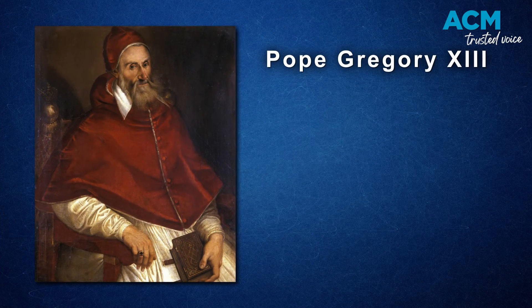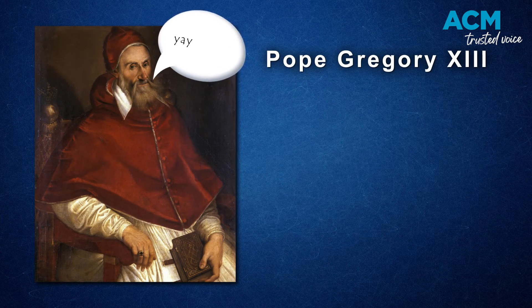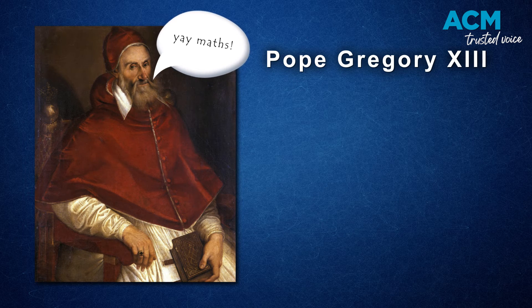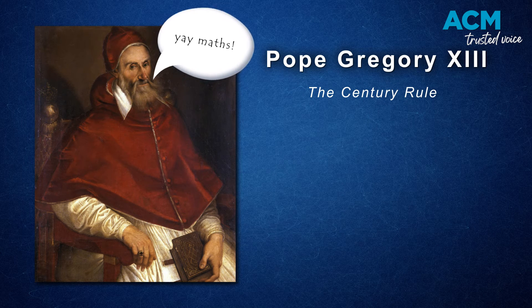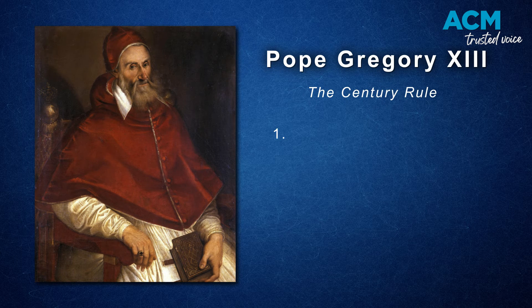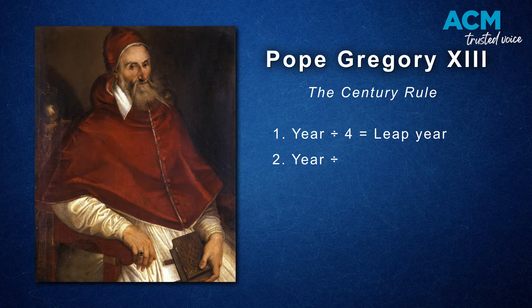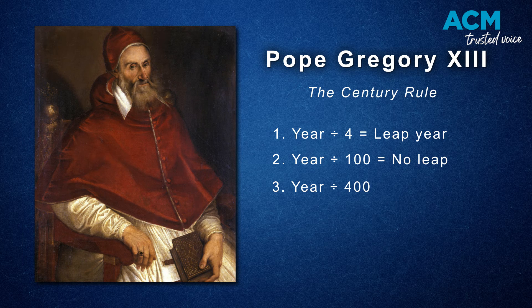It's pretty confusing stuff. But thanks to Pope Gregory the 13th, we have some mathematical rules we can follow to know when a leap year will fall. This is the century rule: years with the added leap year are divisible by four. Leap days are not added to years that are divisible by 100. If that year is divisible by 400, then a leap year is added after all.